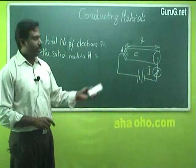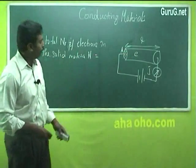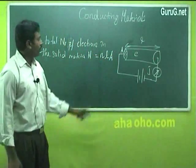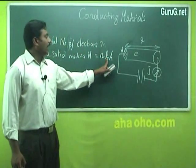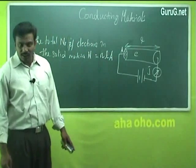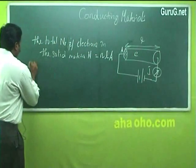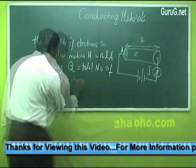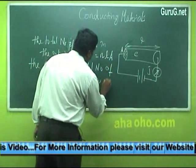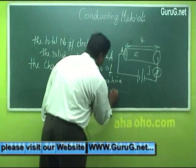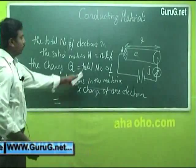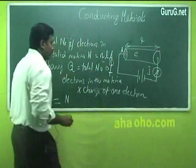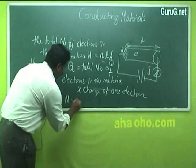The conduction is mainly due to the number of electrons present inside the solid material. The total number of electrons N is equal to n × l × A, where n is the number of charge carriers, l is the length of the specimen, and A is the cross-sectional area. This is equation 1. The total charge of the specimen equals the total number of electrons N multiplied by the charge of one electron, which is given as −e. This is equation 2.